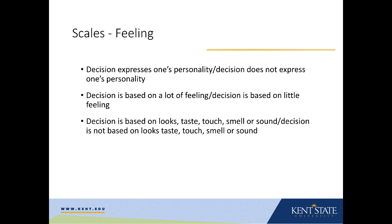The feeling items are: 'decision expresses one's personality' or 'decision does not express one's personality'; 'decision is based on a lot of feeling' or 'decision is based on little feeling'; and 'decision is based on looks, taste, touch, smell, or sound' or 'decision is not based on those.' You'll notice that item one, which focuses on personality, may be more relevant in high involvement than item three. Item three is probably more relevant for low involvement, but could also be relevant for high involvement, and item two is probably relevant for both.